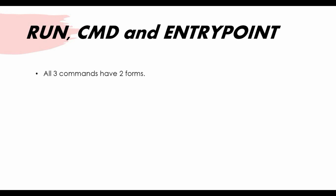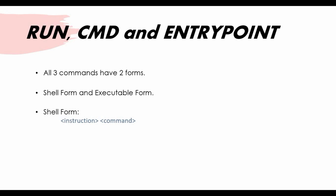All three commands — RUN, CMD, and ENTRYPOINT — have two kinds of forms. One is the shell form and the other is the executable form. In shell form, you write the instruction followed by the command, for example: RUN <command>, CMD <command>, or ENTRYPOINT <command>. In executable form, you use square brackets: RUN ["executable", "param"], CMD ["executable", "param"], and similarly for ENTRYPOINT. We'll see examples of both forms with practical demonstrations.